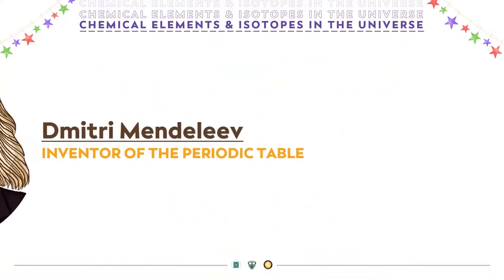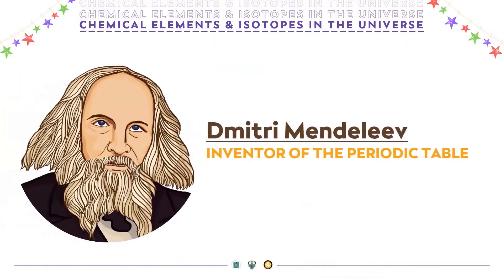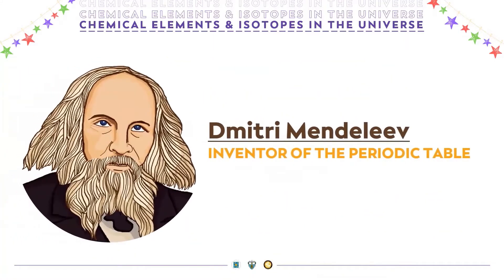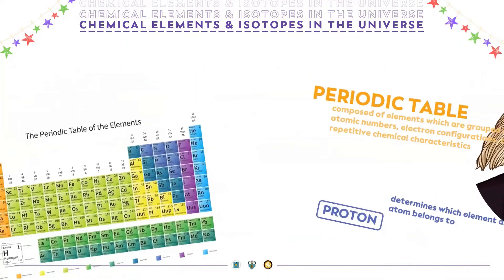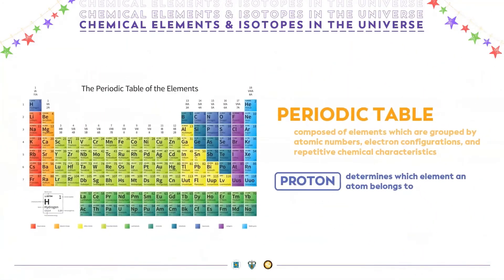Dimitri Mendeleev invented the periodic table. Periodic tables are composed of elements which are grouped by atomic numbers, electron configurations, and repetitive chemical characteristics. The proton is the one that determines which element an atom belongs to. For example, one proton is hydrogen, while two protons are helium, and so forth.